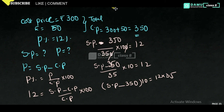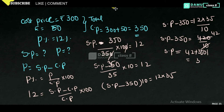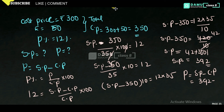So SP minus 350 equals 12 into 35 divided by 10, which gives 420 by 10, equals 42. Therefore SP equals 42 plus 350, which is 392. Then profit equals SP minus CP equals 392 minus 350, giving profit equal to 42 rupees.